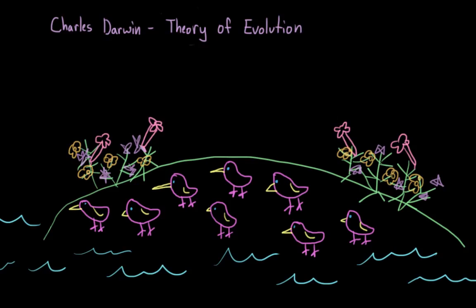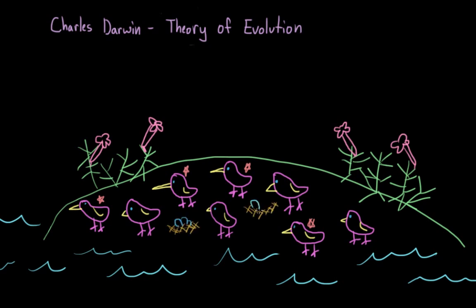But because this type of flower happened to thrive after the drought, now suddenly the birds with long, thin beaks are much better adapted to their environment than the birds with thick, short beaks. Because our long beaked birds can reach the seeds and eat, they are more likely to survive and importantly, they're able to survive to an age where they can reproduce.